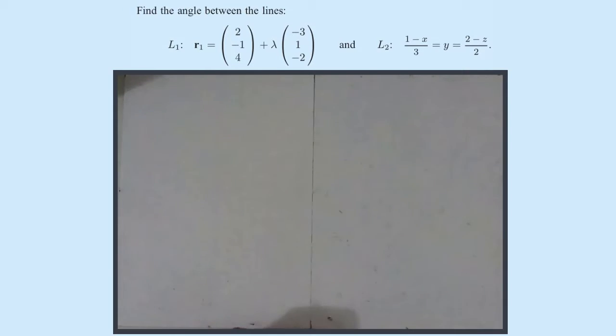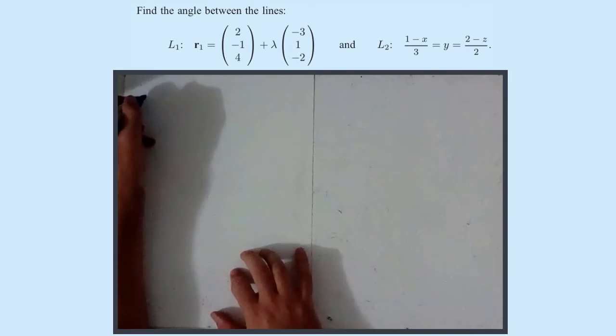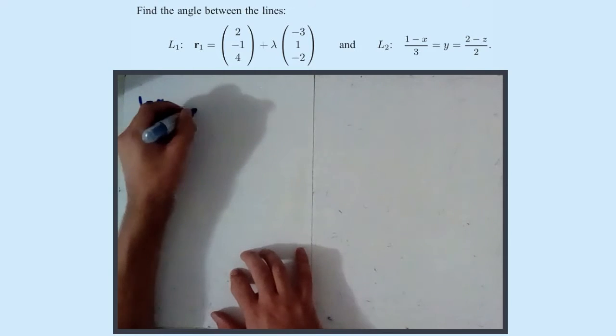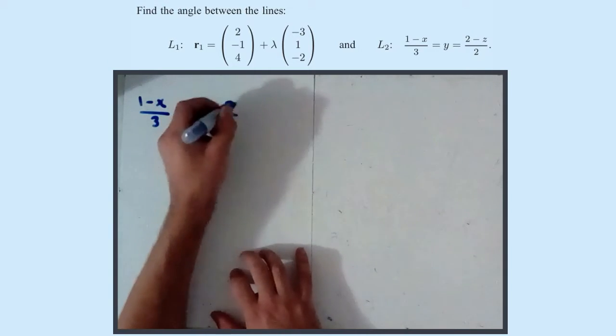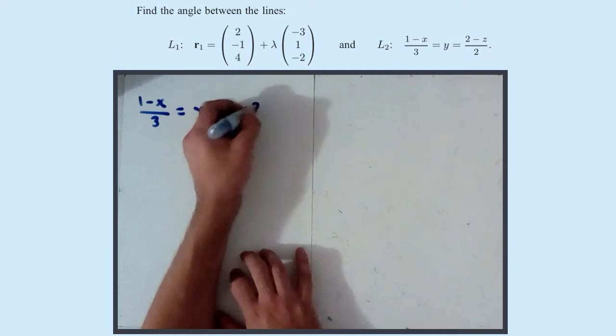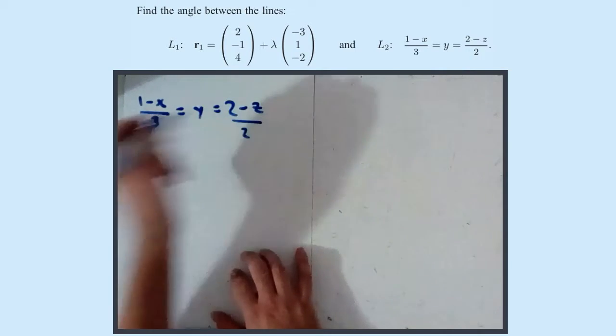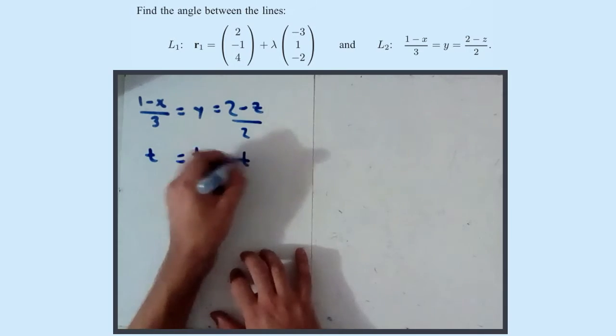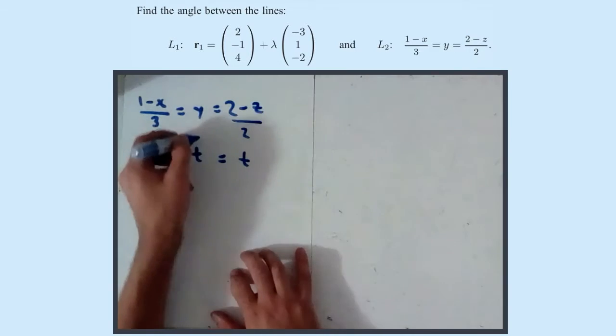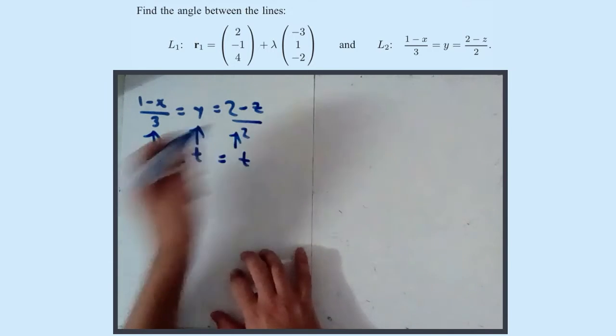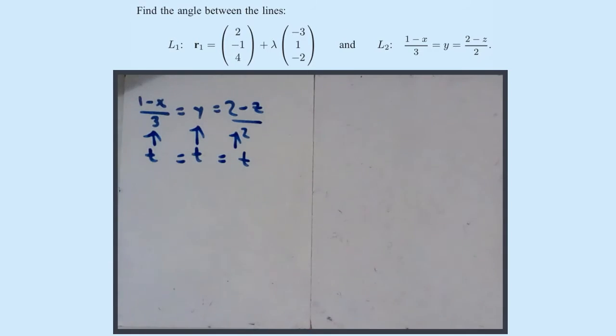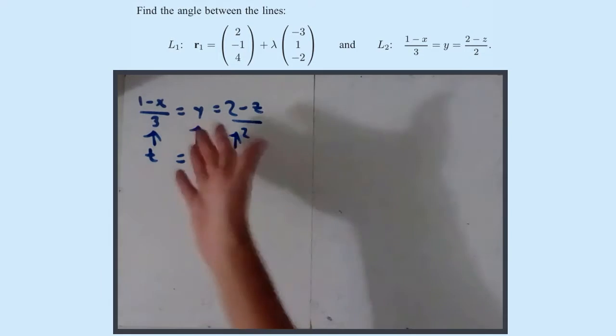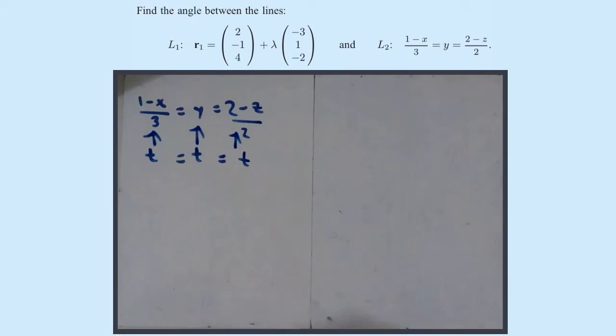For line 2, we're now going to work on that. So we have (1 - x)/3 equals y equals (2 - z)/2. Remember, you say this is t equals t equals t. So I'm calling all of these t. Y shouldn't be a problem. Then I'm just going to solve for x and solve for z. So y already is t.